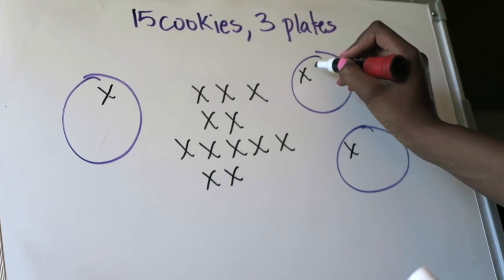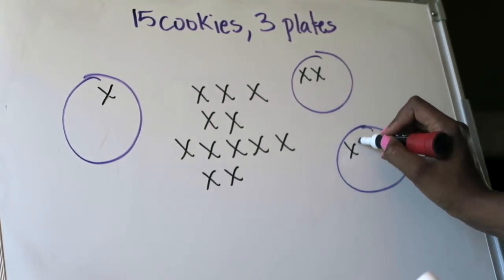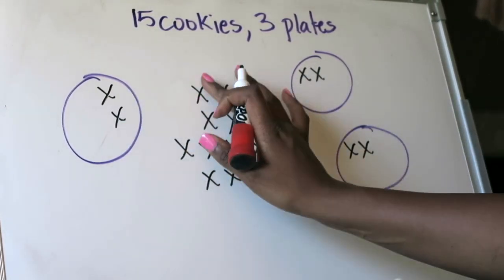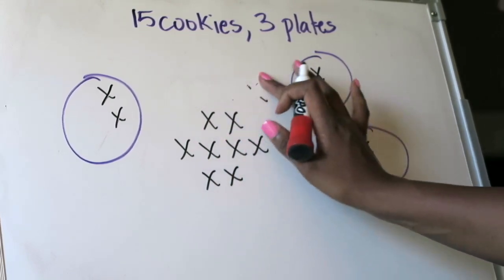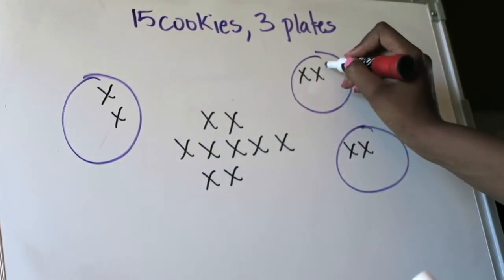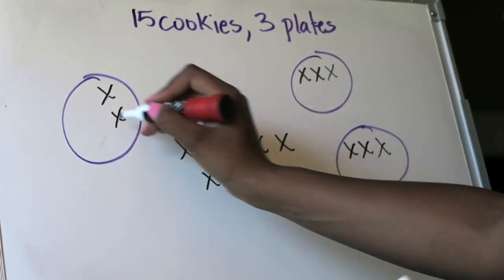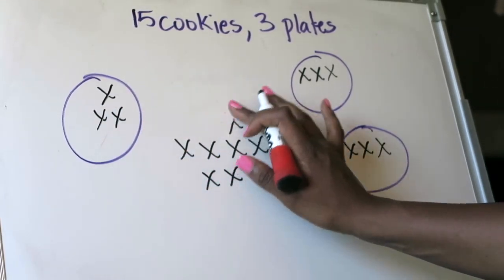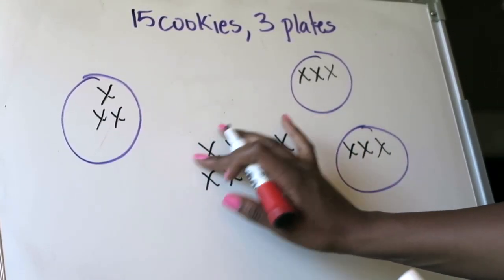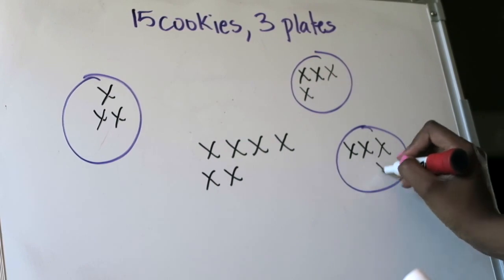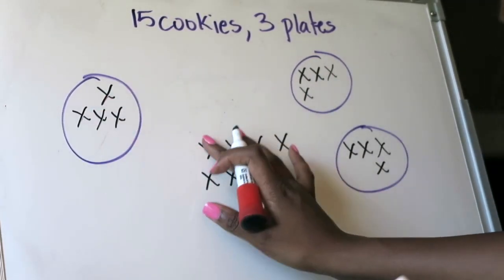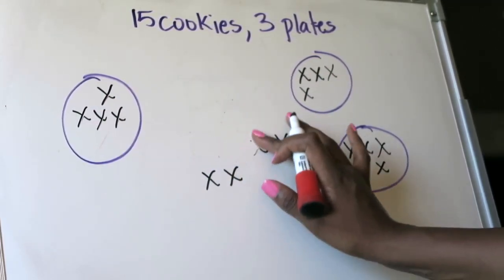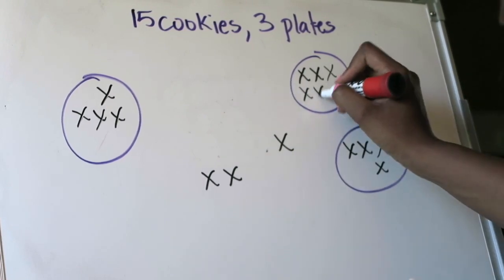Keep going because I have cookies left because I'm doing this until I run out of cookies. One, two, and three. Erase those three. I still have them left so I gotta keep going. One, two, three. Erase another three. One, two, three. Erase another three.